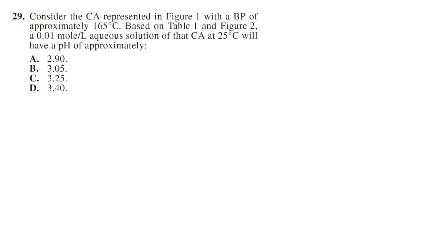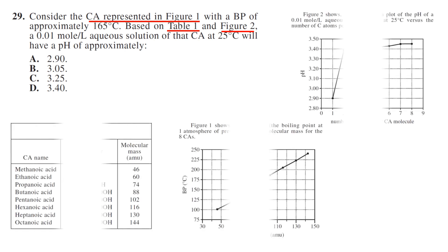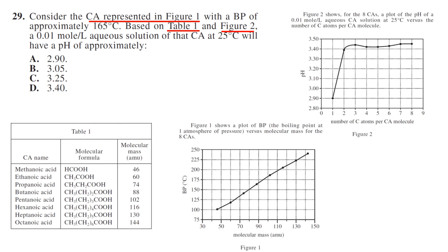Number 29. We're using figure 1 and table 1 and figure 2, so all of them. So consider the CA represented with a BP of approximately 165 and 0.01 mole of aqueous solution. The pH will be approximately what?